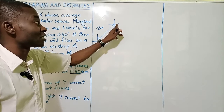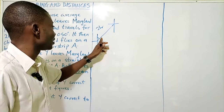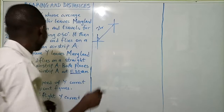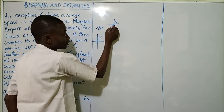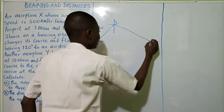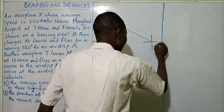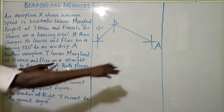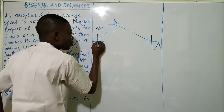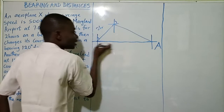The plane arrived at the airstrip at 11:30 am, so after changing course it continued its journey for another two and a half hours. The distance after the change will therefore be longer. The question says that after changing course it traveled on a bearing of 120 degrees. Since 90 degrees is straight east, 120 degrees is a bit further. Let's say this is the final airstrip A. Another aeroplane Y leaves the same Maryland airport at 10 am and flies on a straight course to airstrip A.